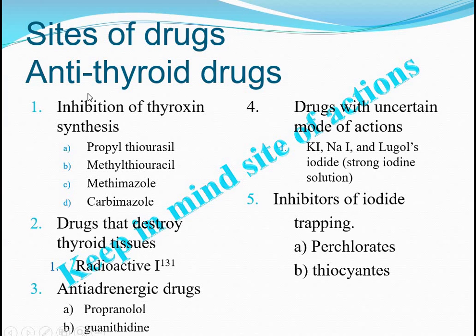The classification of anti-thyroid drugs: for inhibiting synthesis of thyroxine, there are thioamides — propylthiouracil, methylthiouracil, methimazole, and carbimazole. Drugs that destroy thyroid tissue include radioactive iodine-131. In hyperthyroidism, radioactive iodine-131 destroys hyperthyroid cells, but this leads to simultaneous release of stored T3 and T4, which can cause problems because T4 is calorigenic and increases heart rate.